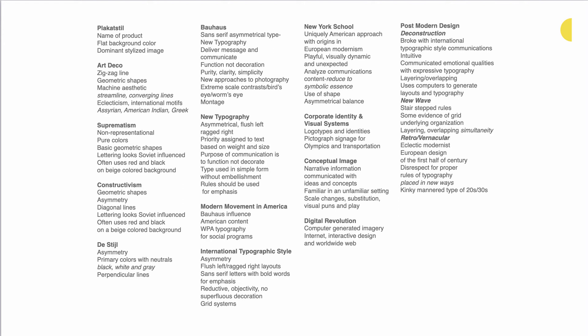You don't have to split the styles between Suprematism and Constructivism. Bauhaus and the New Typography are also one item on the exam. Modern Movement in America, International Typographic Style, the New York School, corporate identity and visual systems, conceptual image, and the digital revolution and postmodern design, along with its sub-styles, are all one item on the exam.